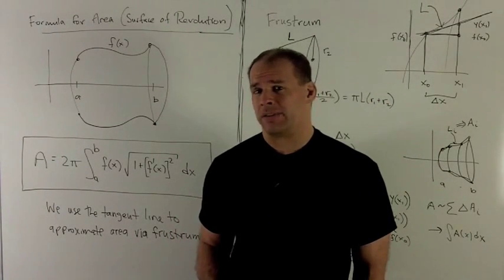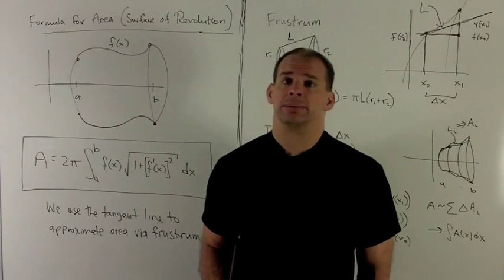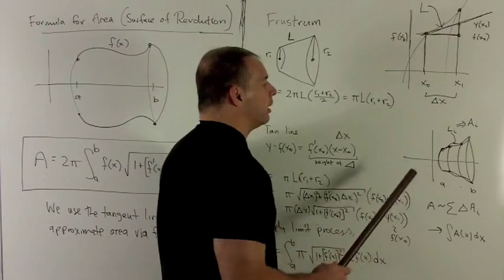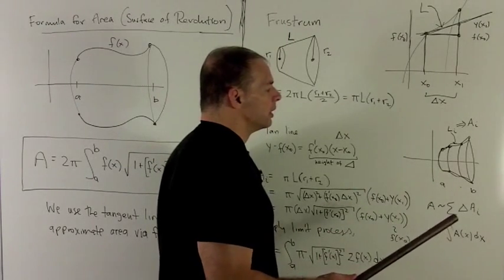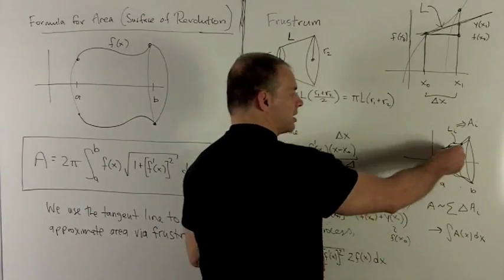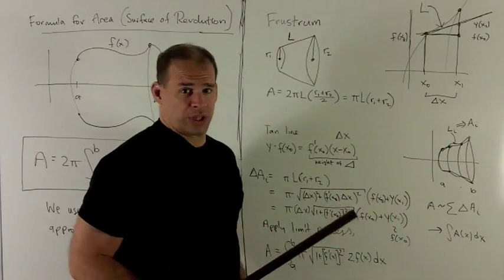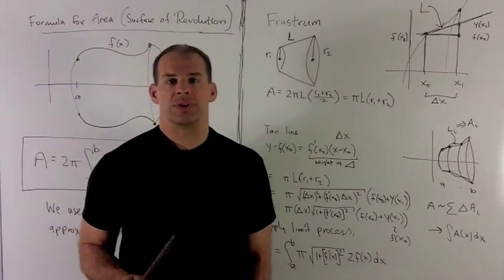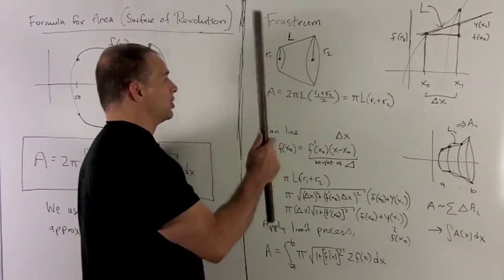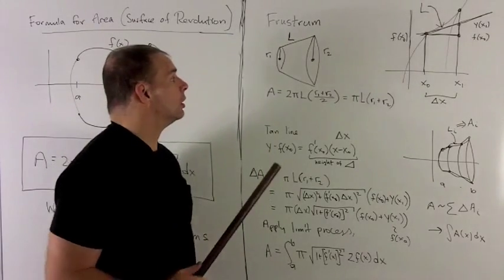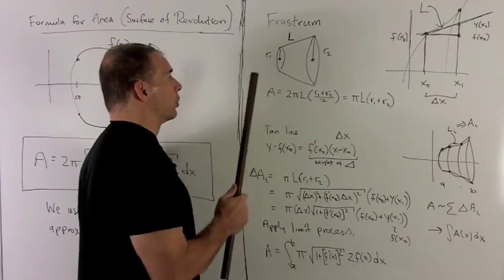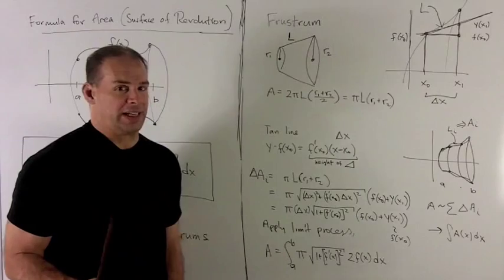This derivation is going to look a lot like our derivation for arc length. I'm going to take my interval from A to B and chop it up into a lot of tiny subintervals. Over each subinterval, we're going to pull out a slice, which I can approximate with a frustrum. A frustrum is just a right circular cone with the end chopped off at a right angle — or equivalently, a right circular cone with a smaller right circular cone subtracted from the front.